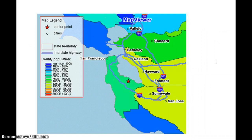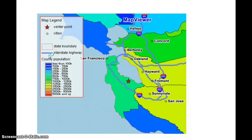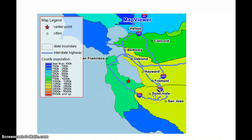In this map we have both symbols and colors. We have stars for center points, circles for cities, blue lines for interstate highways, and red lines for state boundaries. We can see some roads right here, some cities like Sunnyvale, and a center point with the star.